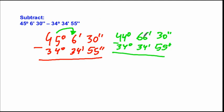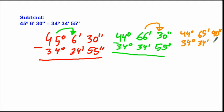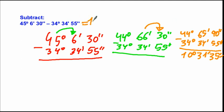But we still can't subtract the seconds, so we convert one minute into 60 seconds, giving us 44 degrees, 65 minutes, and 90 seconds. Subtracting 34 degrees, 34 minutes, and 55 seconds gives 35 seconds, 31 minutes, and 10 degrees. The result is 10 degrees, 31 minutes, and 35 seconds.